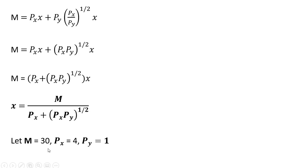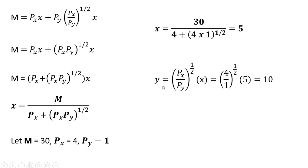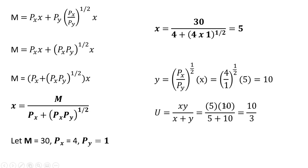Let's set income equal to 30, price of good X equal to 4, and price of good Y equal to 1. Doing that, this consumer will buy 5 units of good X. Taking our utility maximizing condition and plugging in values for X and the prices, the consumer would buy 10 units of good Y. So our utility maximizing consumption bundle is (5, 10). Plugging into the utility function, the consumer has utility of 10 divided by 3.